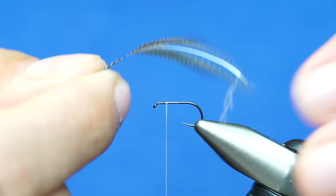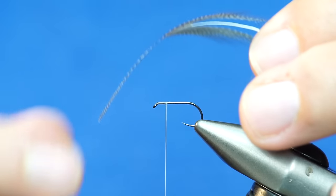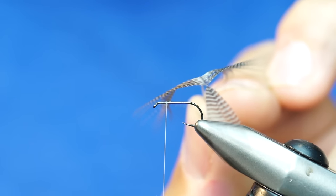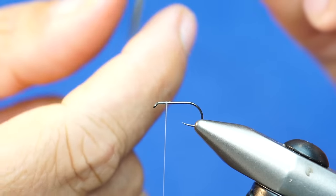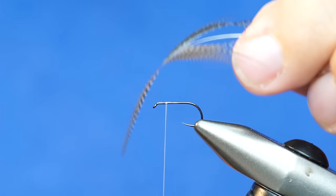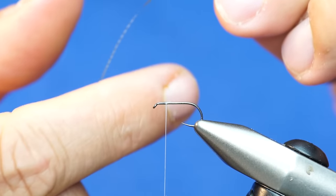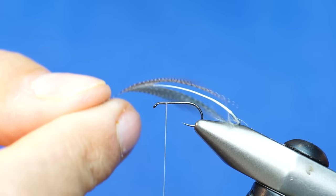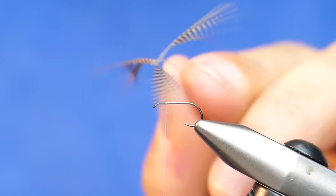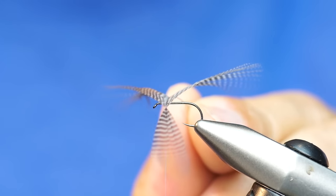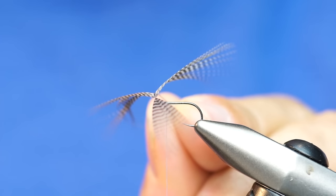You can do this a couple different ways. You'll notice that the feather does have a natural curvature. Regardless of how we tie this in, what we want to make sure is that we have the fibers that are going to peel back to form the wing.